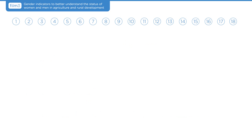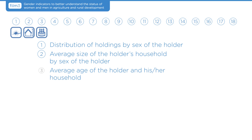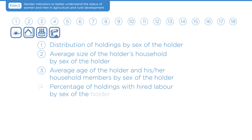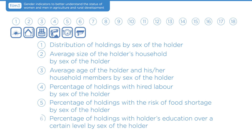The first six indicators are: 1. Distribution of holdings by sex of the holder. 2. The average size of the holder's household by sex of the holder. 3. The average age of the holder and household members by sex of the holder. 4. The percentage of holdings with hired labor by sex of the holder. 5. The percentage of holdings with risk of food shortage by sex of the holder. 6. The percentage of holdings with holders' education over a certain level by sex of the holder.